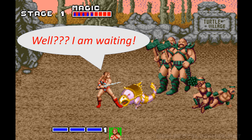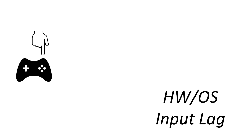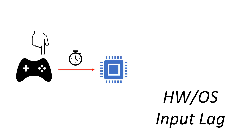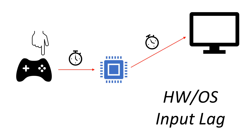Let's recap real quick what input lag is and where it comes from. If you test your controller in the operating system, when you press a button on it, that signal is sent to your computer, processed and displayed on the screen. All of this takes time. This time is usually very small and is measured in milliseconds, which is one thousandth of a second. We will call this the base hardware and operating system input lag.